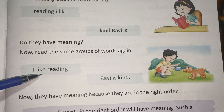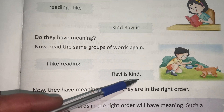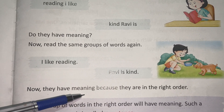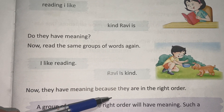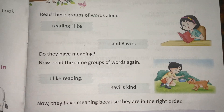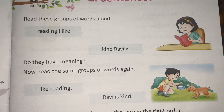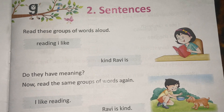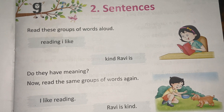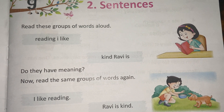I like reading. Ravi is kind. Now they have meaning because they are in the right order. So it is very important that a sentence should be in the right order and should have a proper meaning.